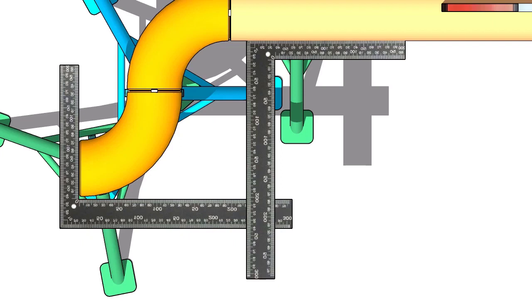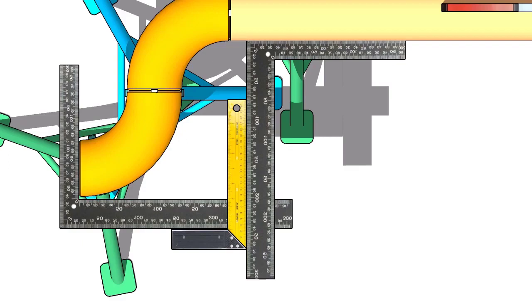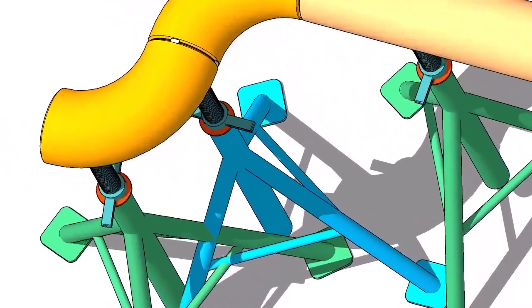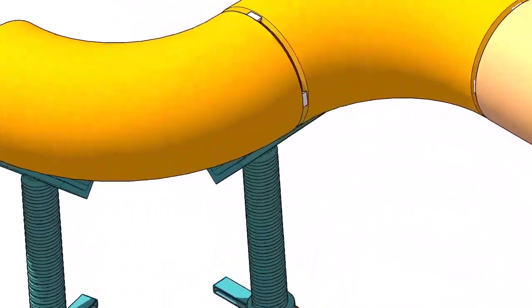Hold two right angles, one on the face of the elbow and one on the pipe side. Now use another right angle and check the squareness. Tack weld on both sides of the elbow.